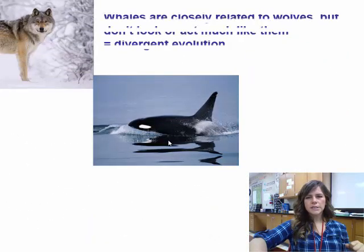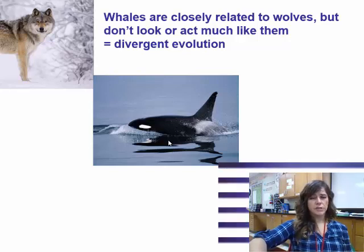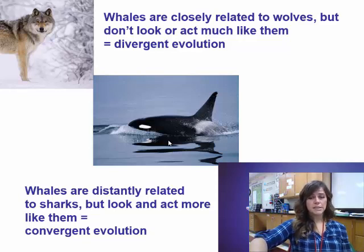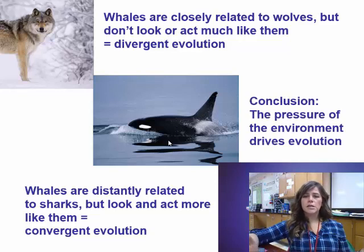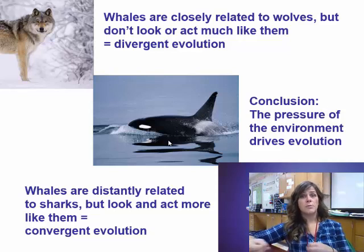Whales are closely related to wolves but don't look or act much like them - that's divergent evolution. But whales and sharks are distantly related yet look and act alike because they live in the same environment - that's convergent evolution. In conclusion, the pressures of the environment basically drive evolution; wherever you live, that's going to drive what adaptations are most fit.